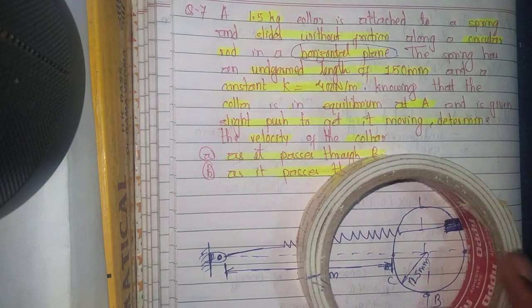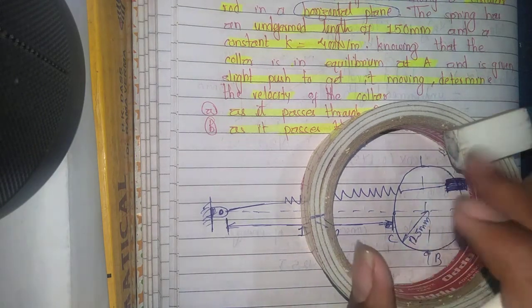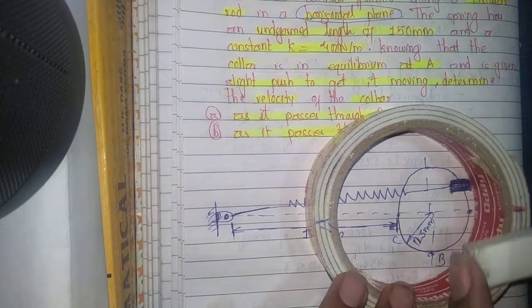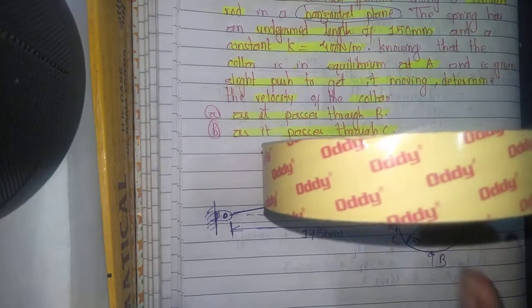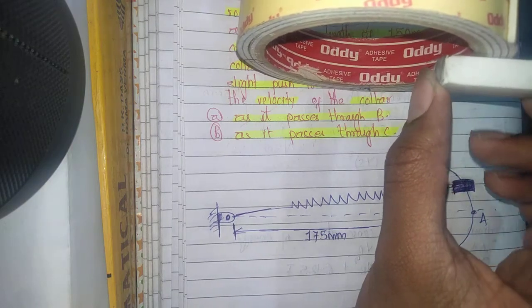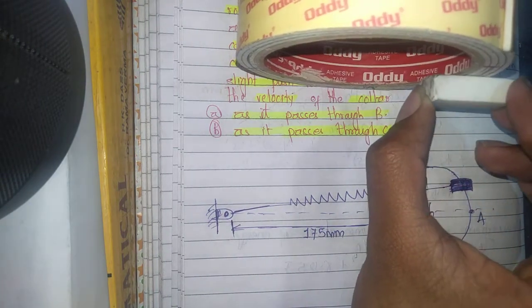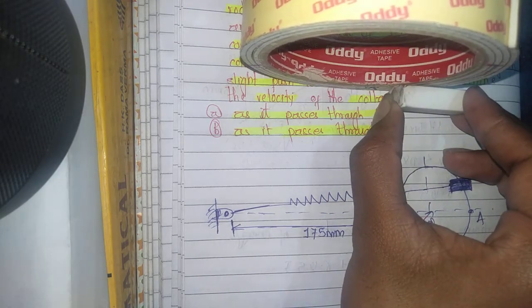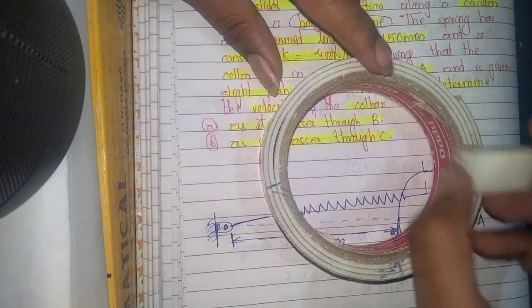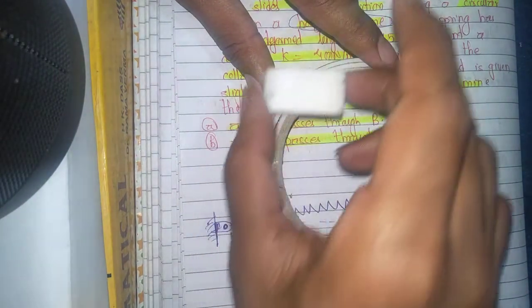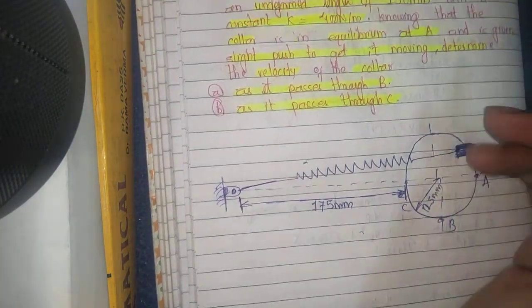Let's say this point is A, and the collar slides on a horizontal plane like this. If the question had said vertical plane, the circular rod would be oriented vertically and the collar would travel a vertical distance, meaning there would be potential energy due to gravity. But since it's a horizontal plane, there is no change in height, so potential energy due to gravity is zero.